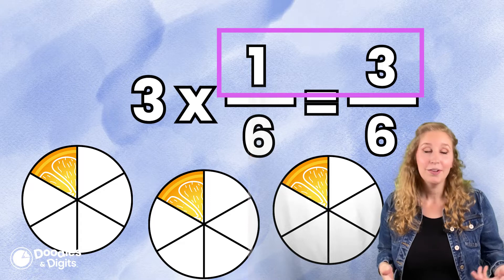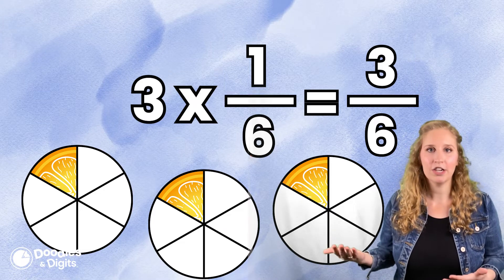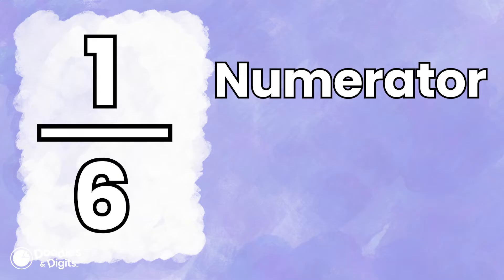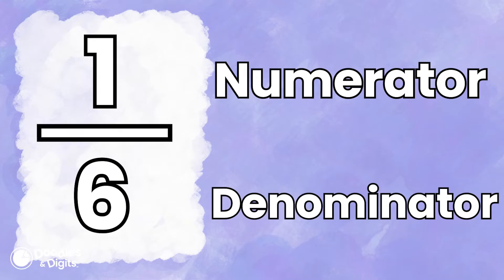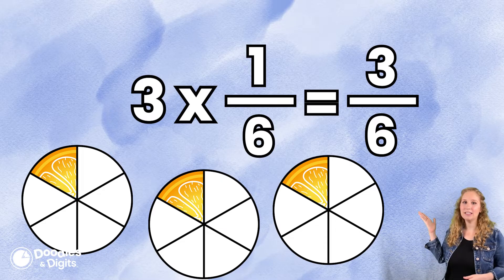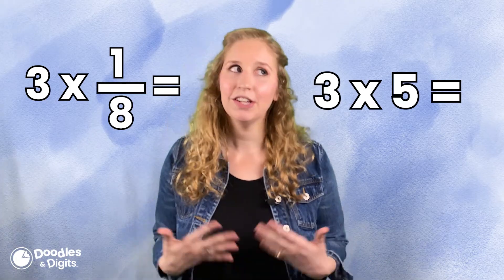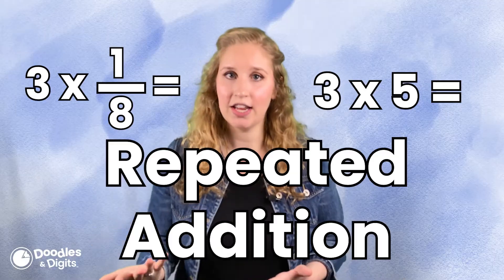Why? Well, because when we look at fractions, remember, the numerator tells us how many pieces we have, and the denominator actually tells us how big the piece is. We're not changing the size of the piece, we're just changing how many pieces we have. When you're multiplying fractions by a whole number, it's similar to multiplying whole numbers. You could think about it as repeated addition.